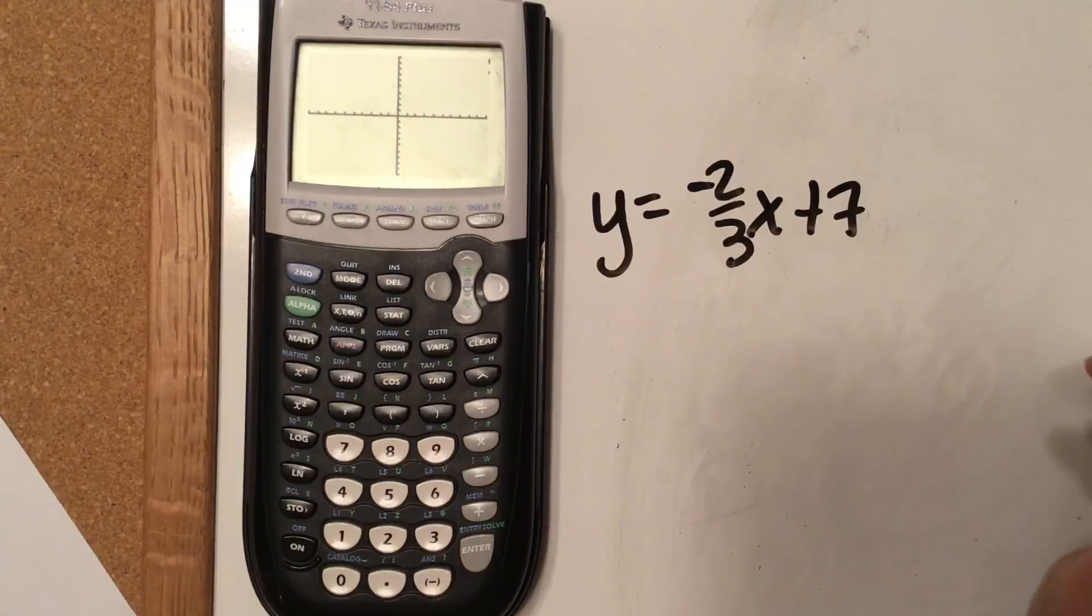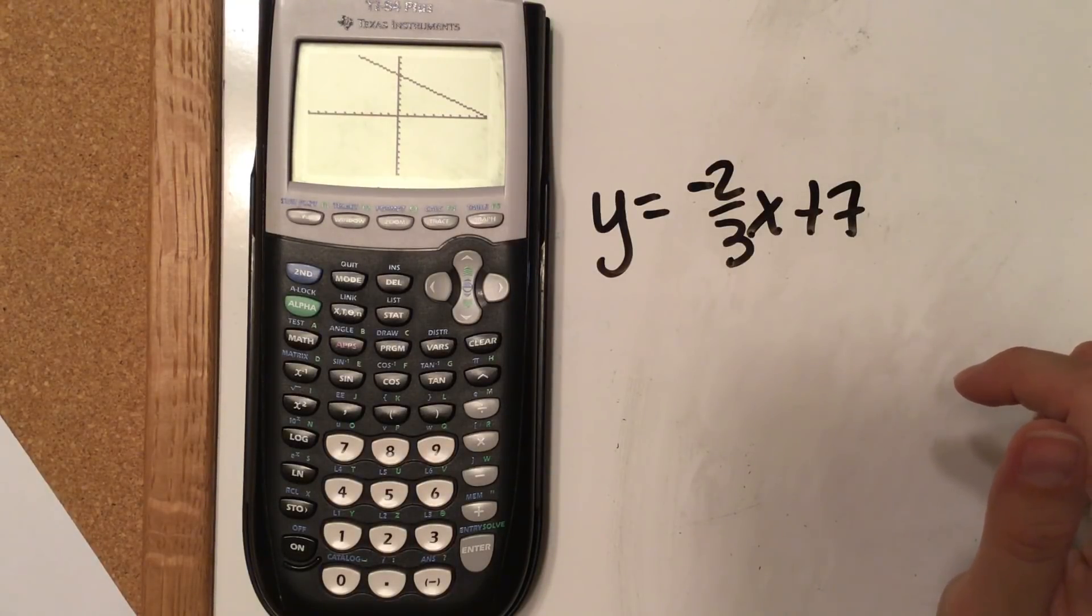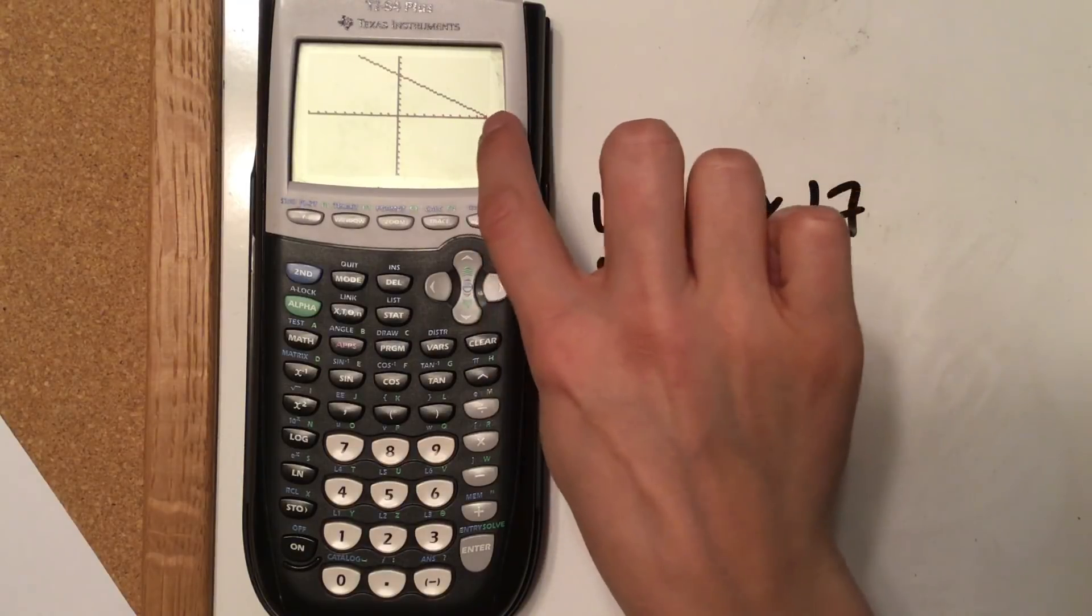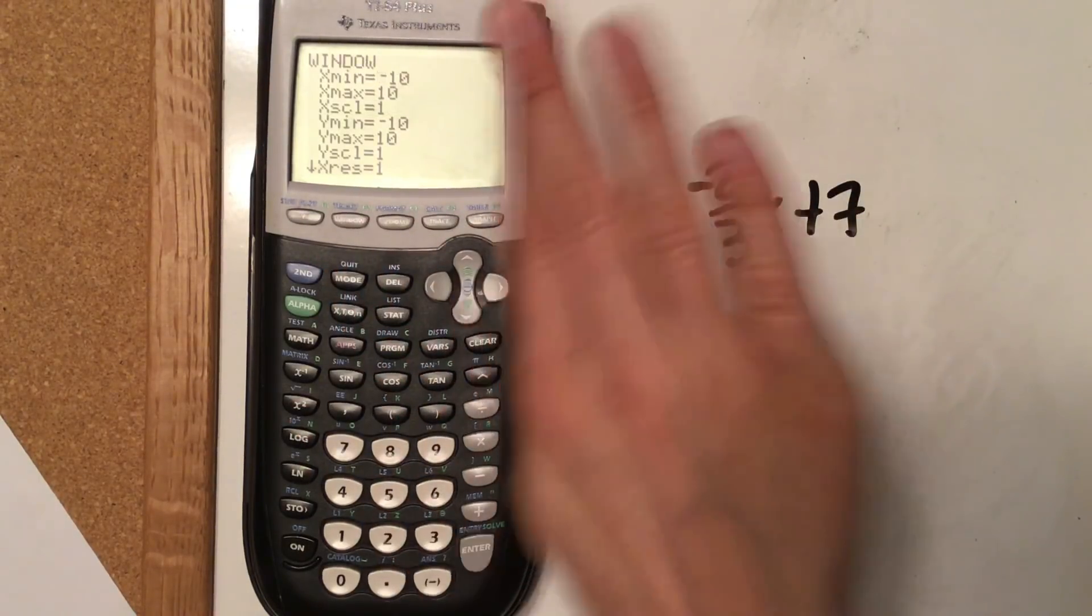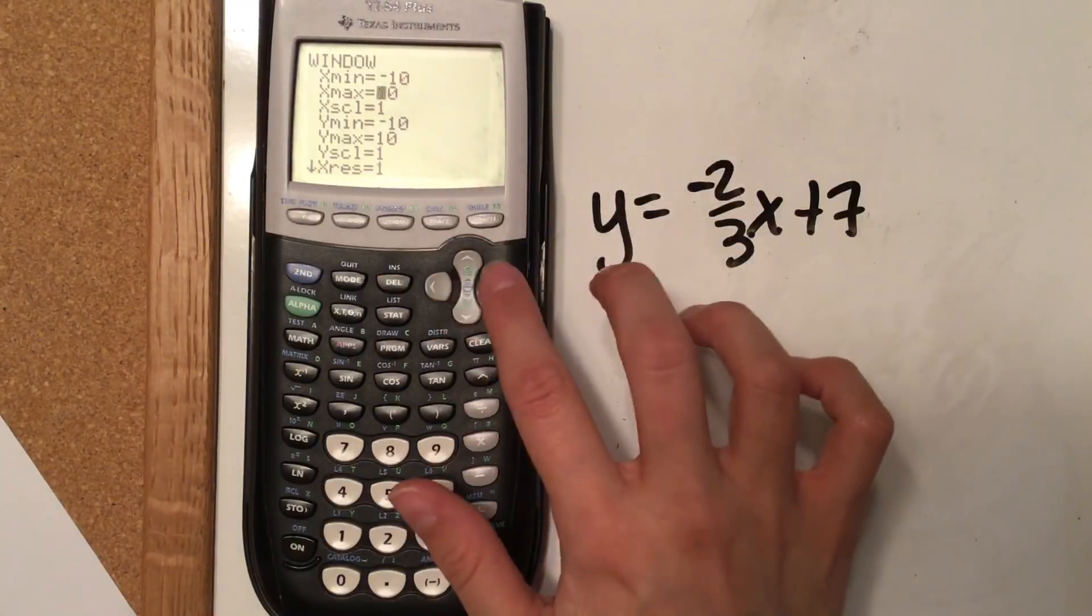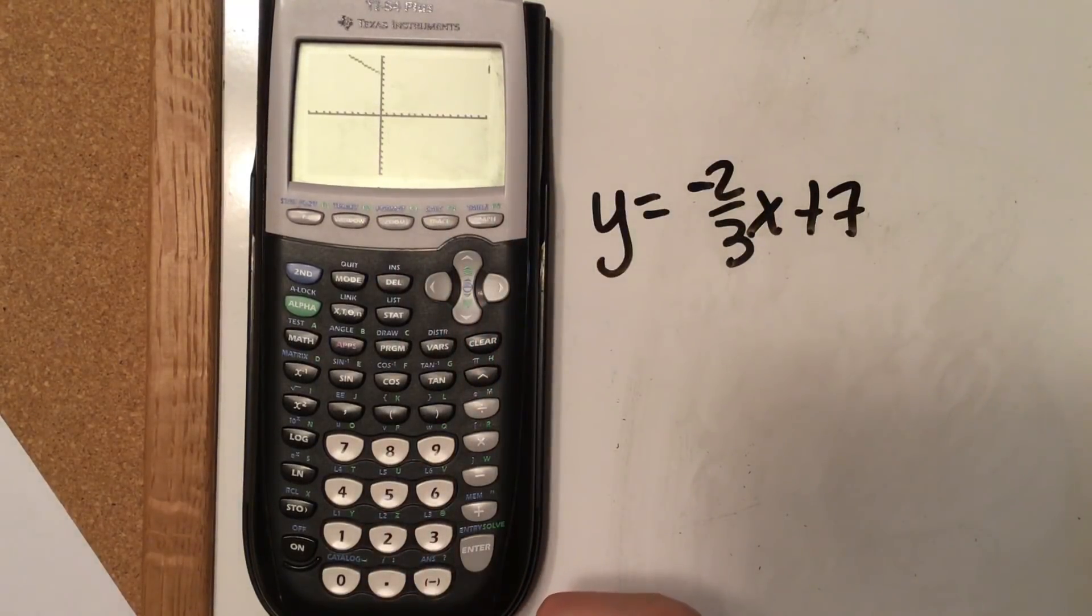I'm going to hit zoom six, so it goes back to our standard window. So there is our graph. It looks like we're very on the edge, so I'm going to move my graph over a little bit so I can see. I'm going to go to my window. I want to move right. X max is to the right, so I'm just going to go to 15, and that should be sufficient.